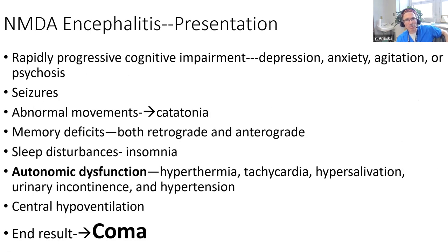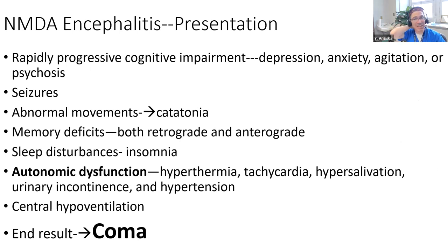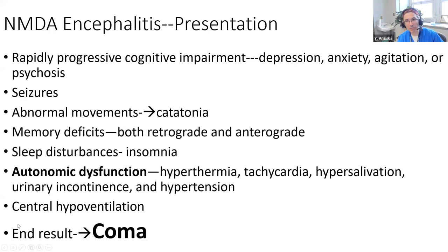How does NMDA encephalitis present? Rapidly progressive cognitive impairment - not necessarily psychosis, could be depression or anxiety - seizures, abnormal movements, and sometimes catatonia. Memory deficits are very significant. Patients frequently have sleep disturbances - either hypersomnolence or insomnia - severe autonomic dysfunction that can be fatal, and central hypoventilation requiring intubation. Without treatment, the end result is coma.